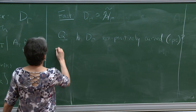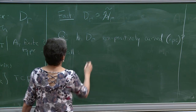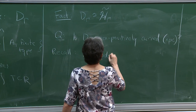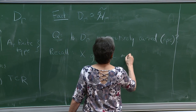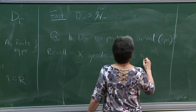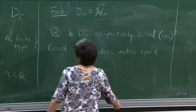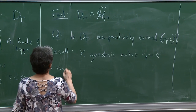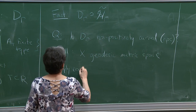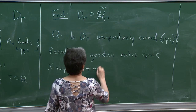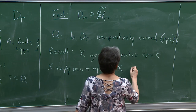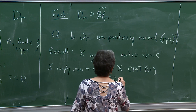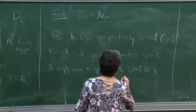If X is a geodesic metric space that is simply connected and non-positively curved, that implies it's CAT(0). And if it's CAT(0), that implies geodesics are unique.